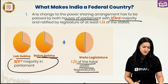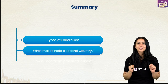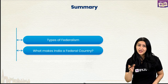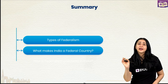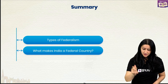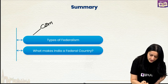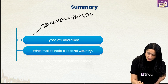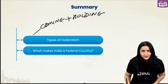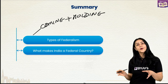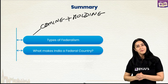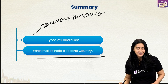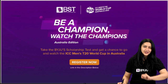We are just about to close this session. Let us quickly summarize what we did today. We studied two types of federalism: the coming together federation and the holding together federation. We also learnt about what makes India a federal country.